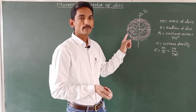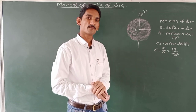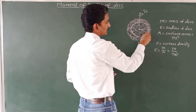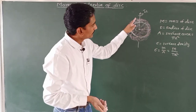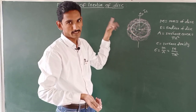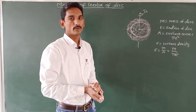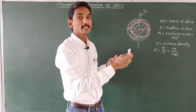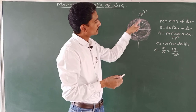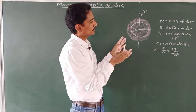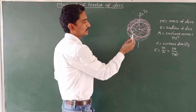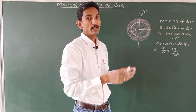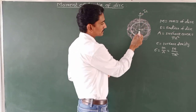Now, how do we determine the moment of inertia of this disk? For that purpose we have to consider a small ring inside this disk. A thin uniform disk consists of a large number of thin rings of varying radii increasing from zero to R. We determine the moment of inertia of each ring and then by integrating from zero to R we get the total moment of inertia.